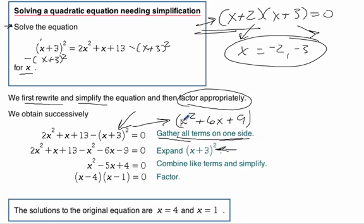But remember, the whole thing is being subtracted, right, because of this negative sign. So we have to distribute that negative sign. So we get a negative x squared, a negative 6x, and a negative 9. So that's this step right here.